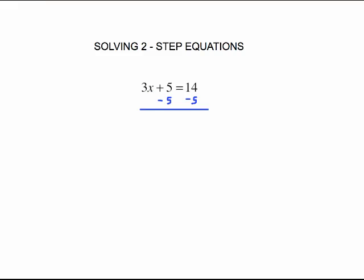So our first step is going to be to subtract 5 from both sides so that we maintain a balance. When we do that, our 5s are going to cancel right here. We're going to be left with 3x equals 9.